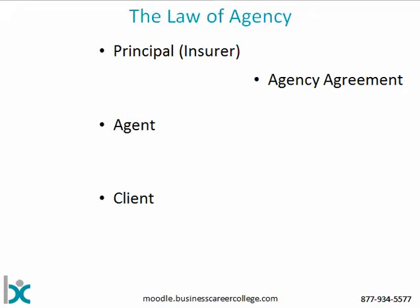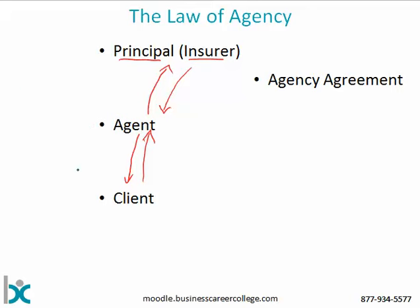Looking at the law of agency — this describes what an agent actually is. We have a principal, most often in our case an insurer. The insurer wants access to clients but doesn't have enough capacity to see all the clients it would like to see, so it introduces an agent into the mix. The agent has a contract with the insurer and goes out to deal with clients, creating a three-way relationship.